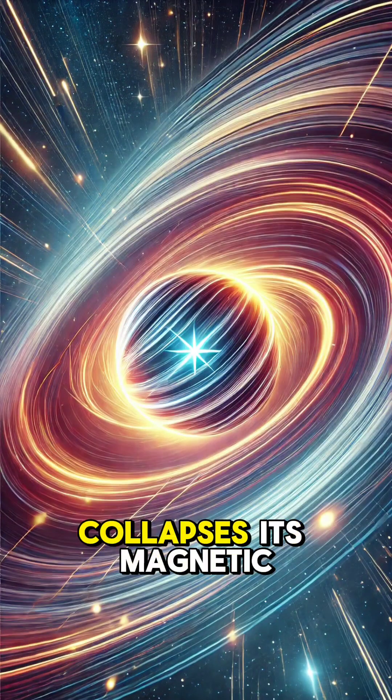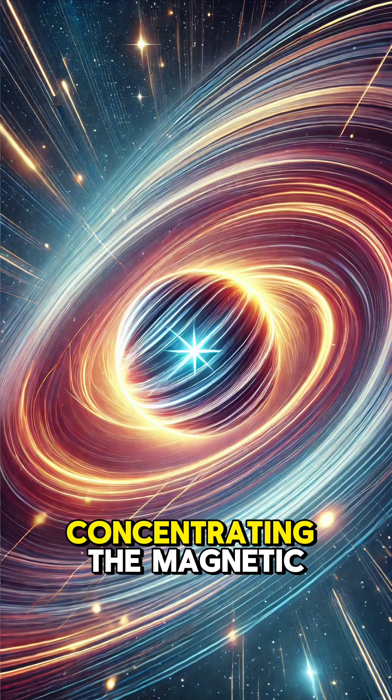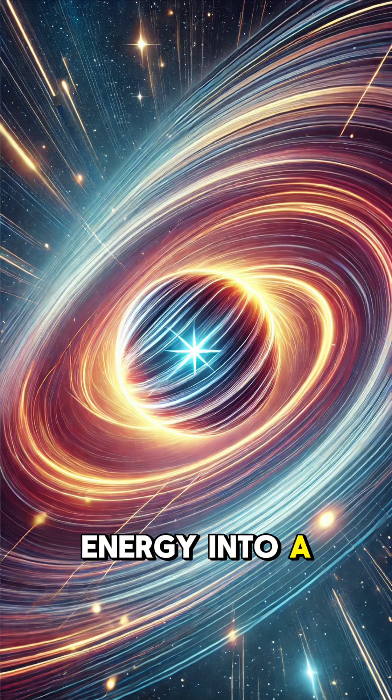As the star collapses, its magnetic field intensifies due to a process called flux conservation, concentrating the magnetic energy into a much smaller space.